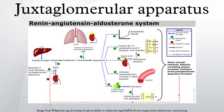The juxtaglomerular apparatus is a microscopic structure in the kidney that regulates the function of each nephron. The juxtaglomerular apparatus is named for its proximity to the glomerulus. It is found between the vascular pole of the renal corpuscle and the returning distal convoluted tubule of the same nephron.